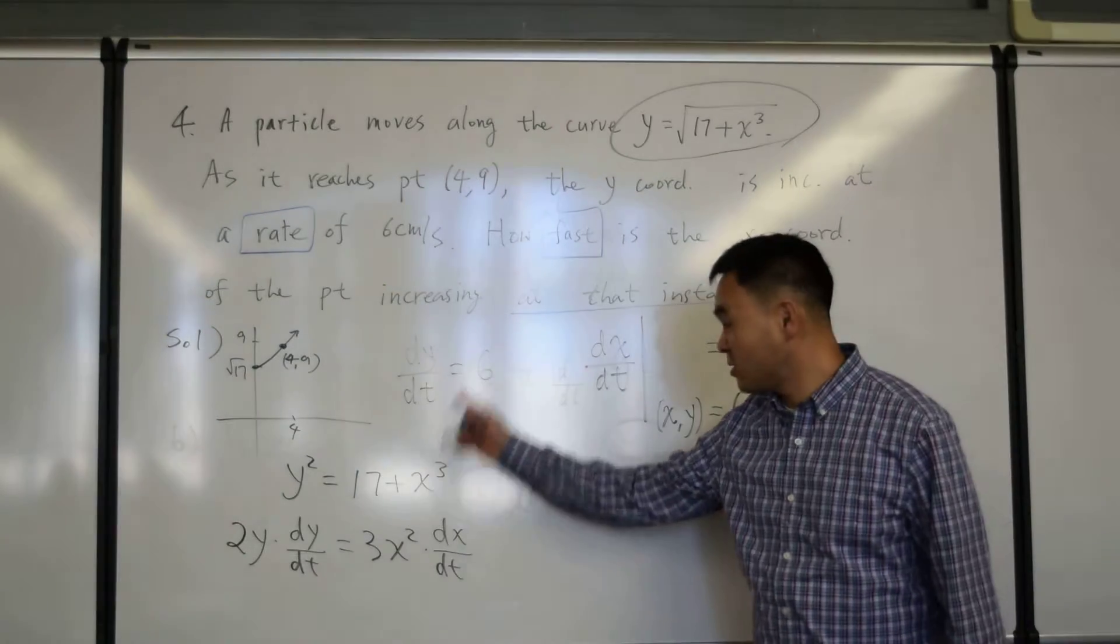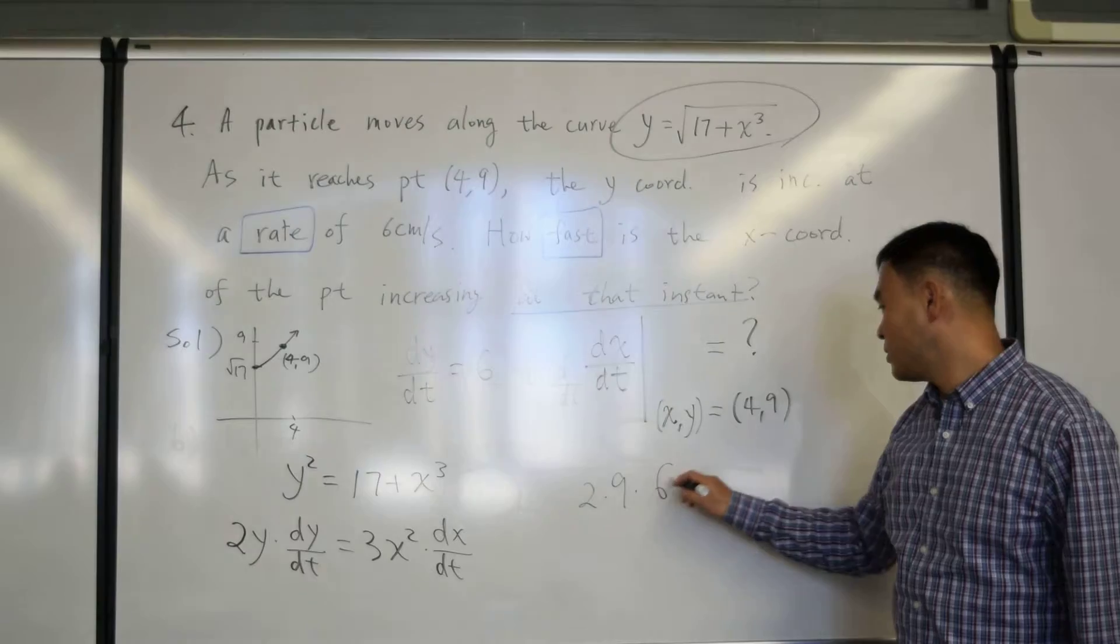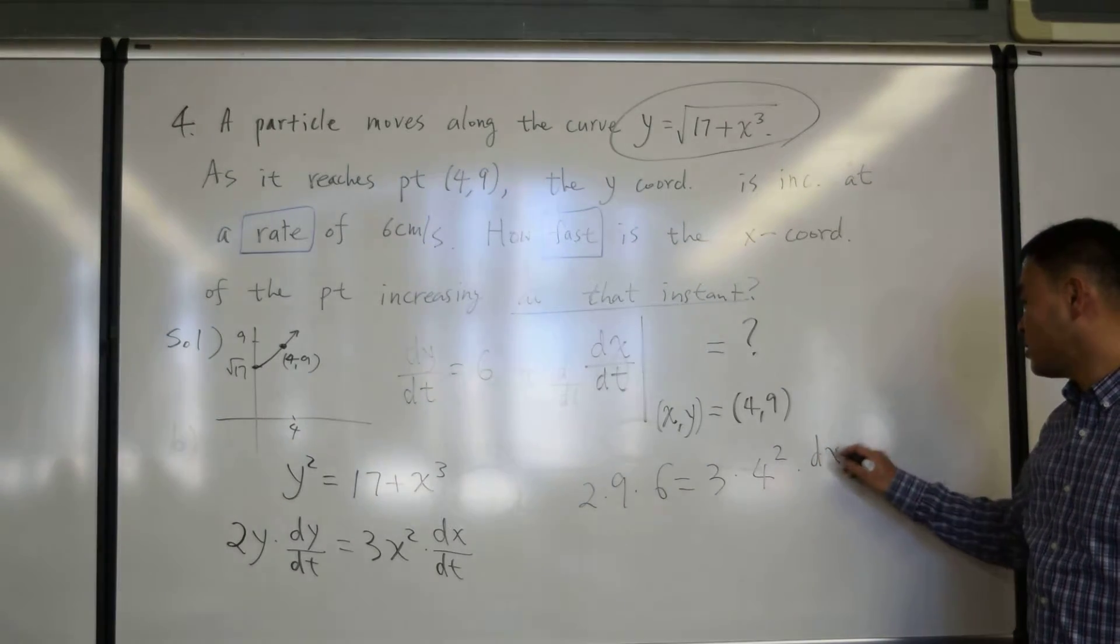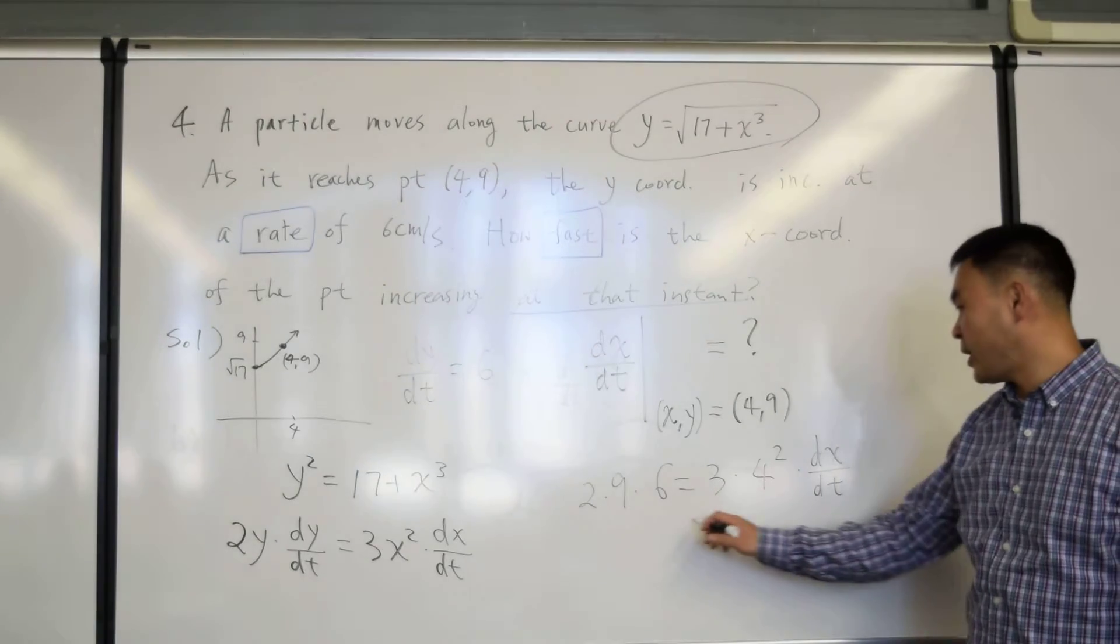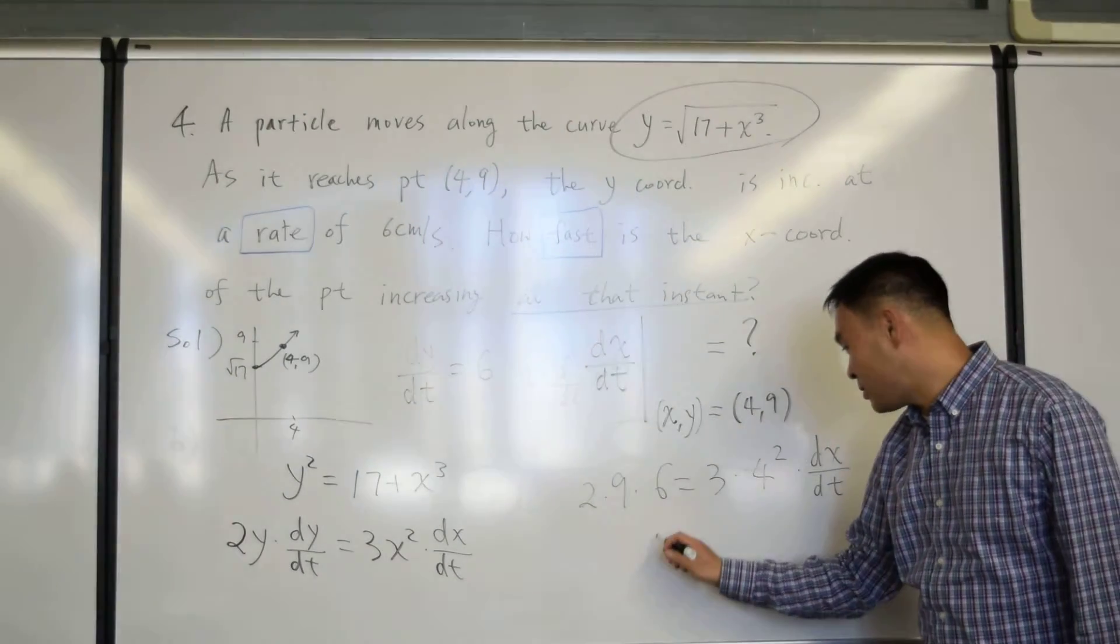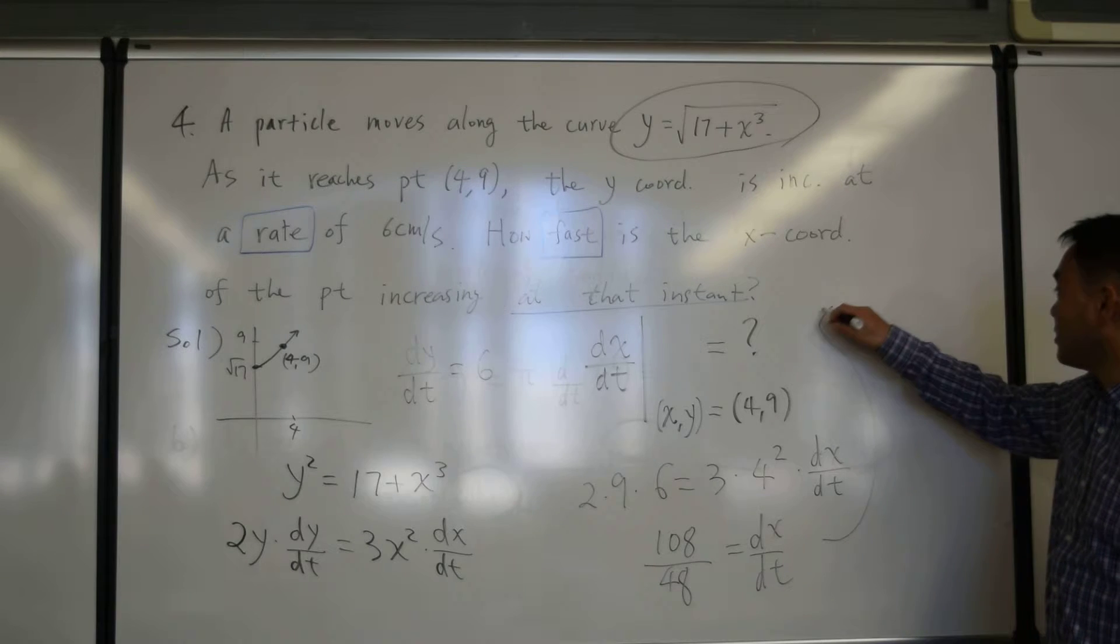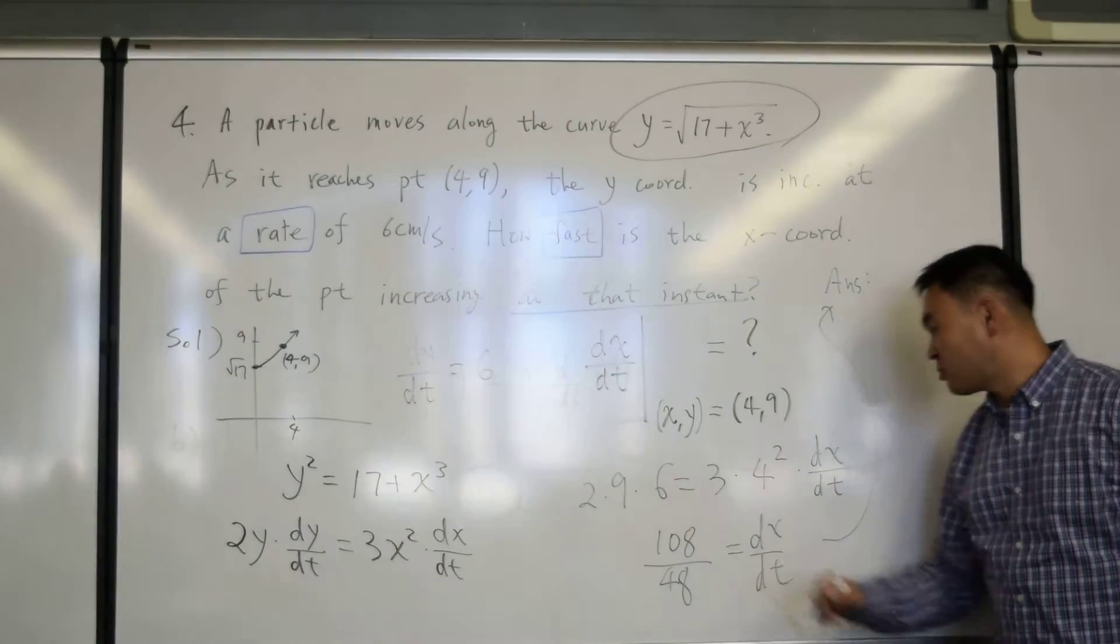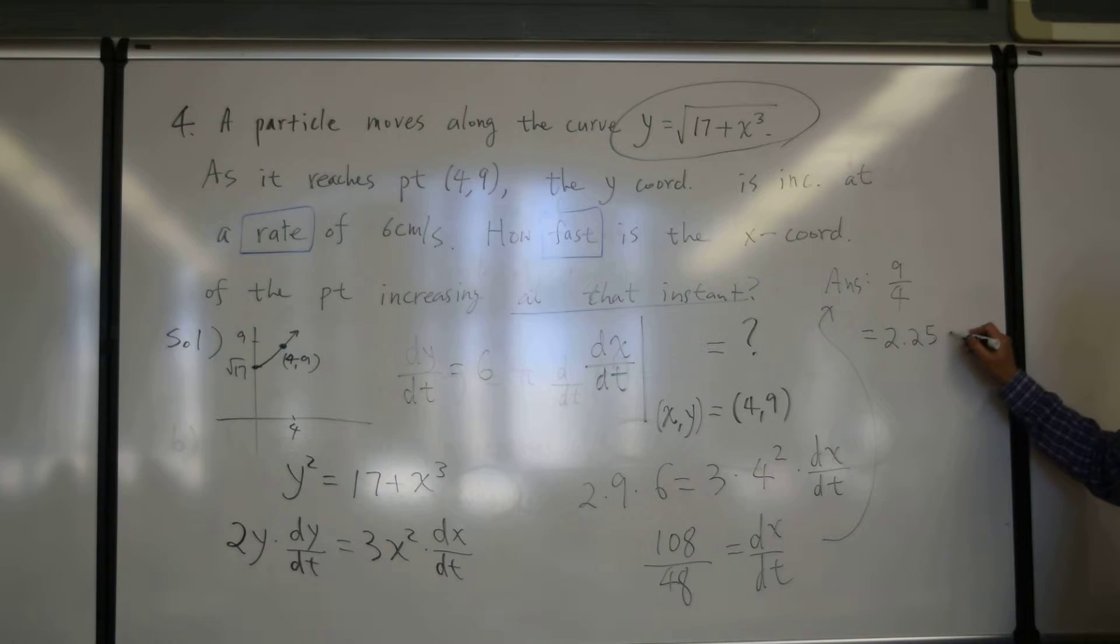Now, you just plug in these things. So, let's see. Y is 9. So, 2 times 9 times dy dt is 6. 3 times x is 4. It's 4 squared. dx dt is the only thing that's not known. Okay. So, let's see. 16 times 3 is 48. So, this is 48. What is that? That's 108. 108 divided by 48 is your dx dt. And if you simplify, the answer will be, they're both divisible by 12, so it's 9 over 4. It's 9 over 4, or in decimals, this is 2.25 centimeters per second.